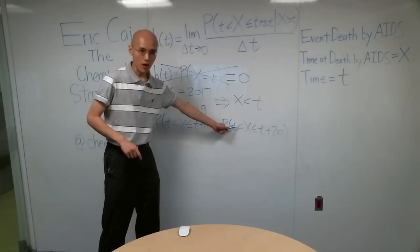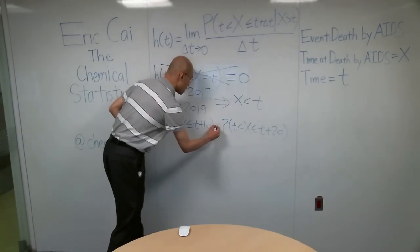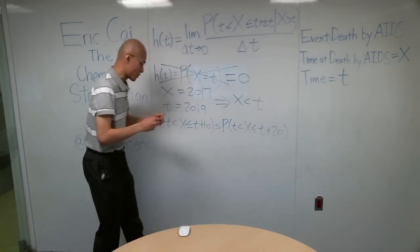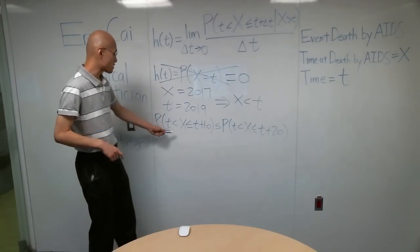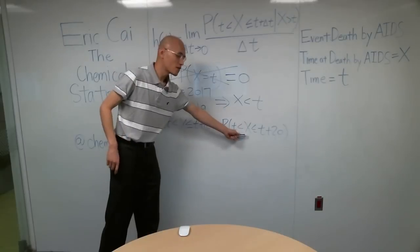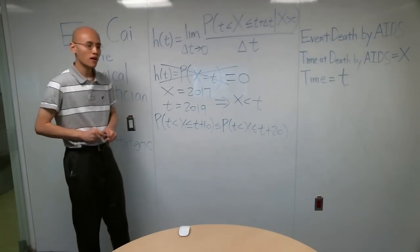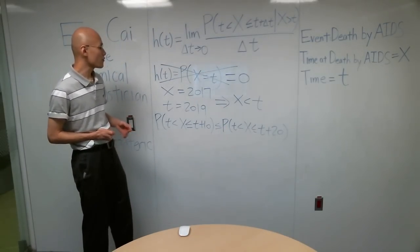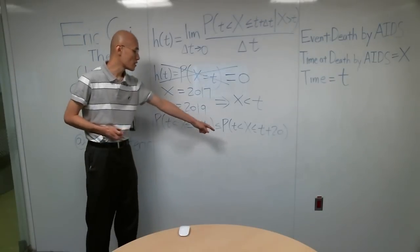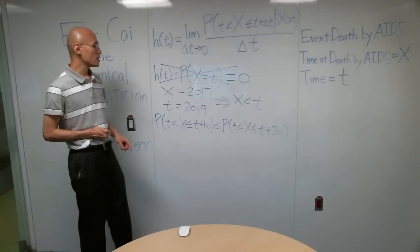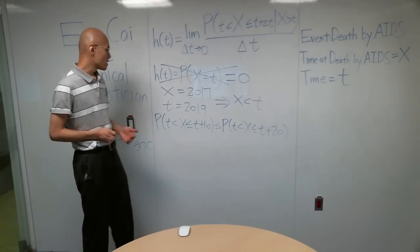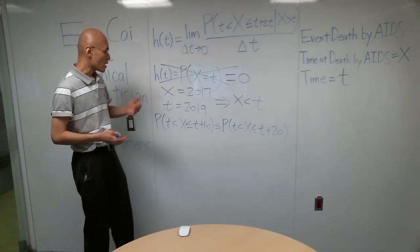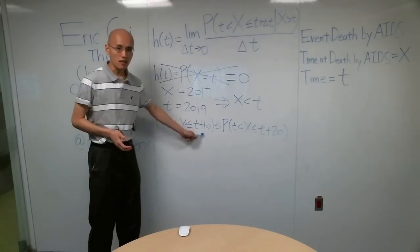This probability is definitely less than this probability, or less than or equal to anyway, because this event is a subset of this event. So if we're defining the hazard function this way, then the intrinsic risk is going to get bigger if delta T gets bigger.